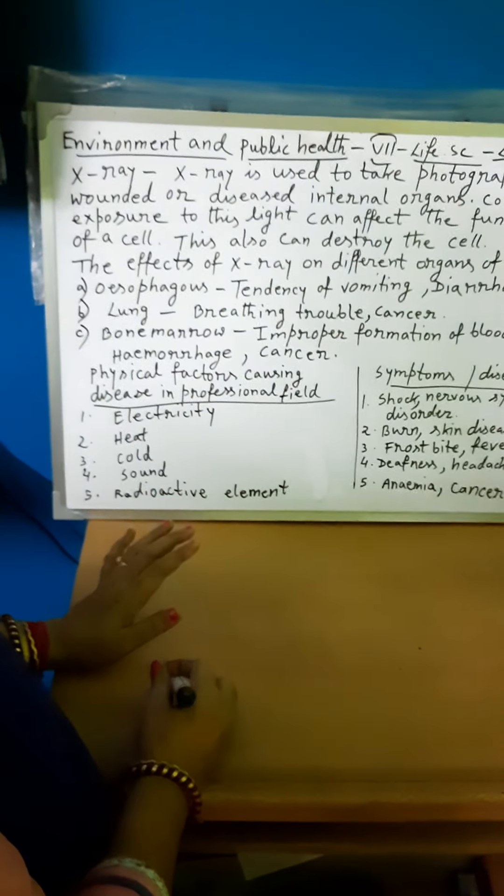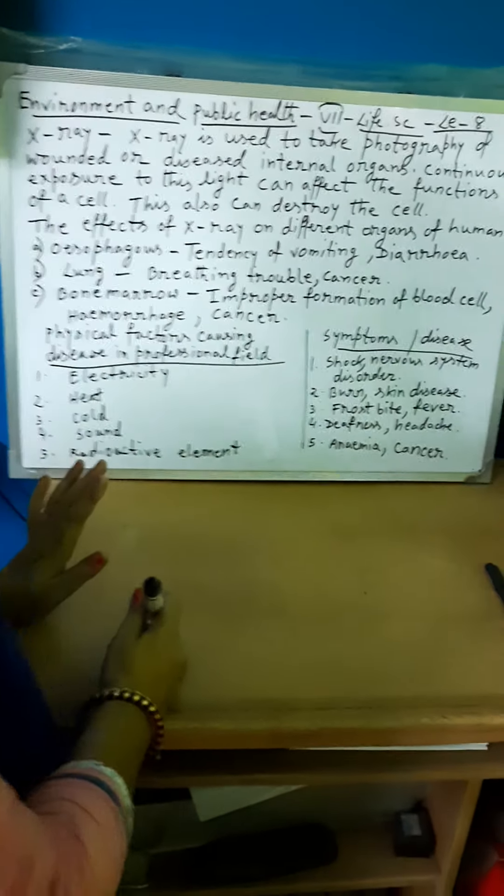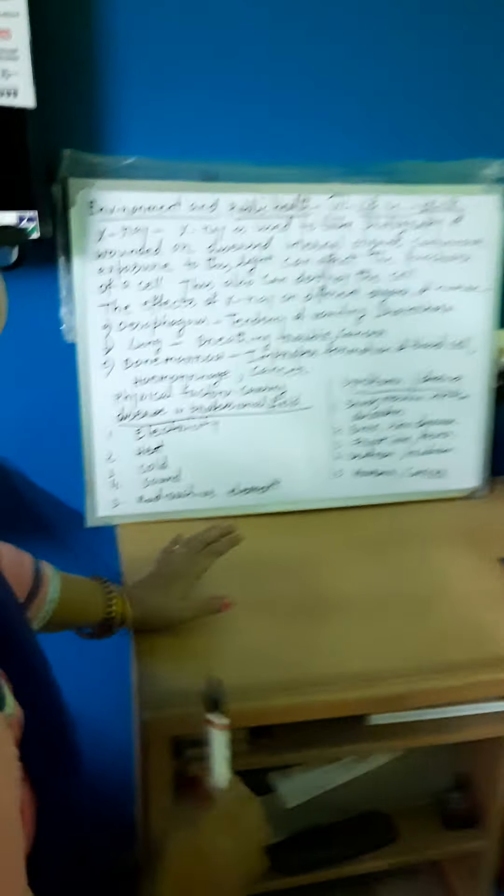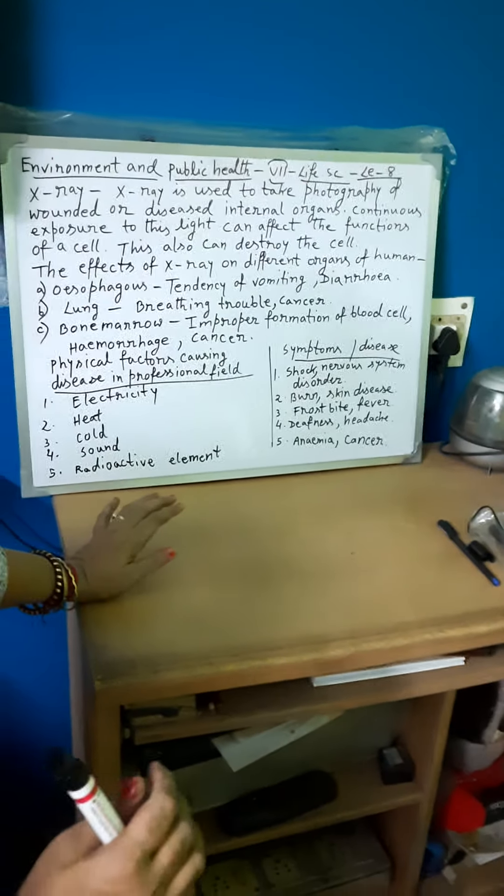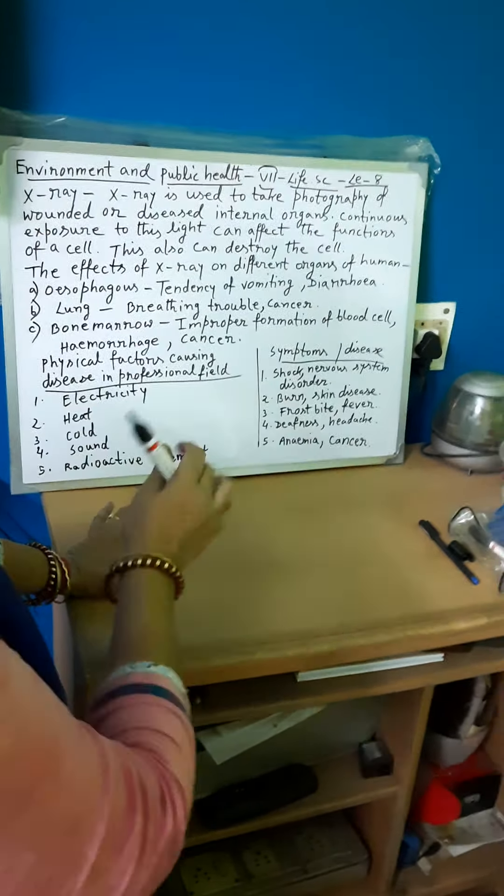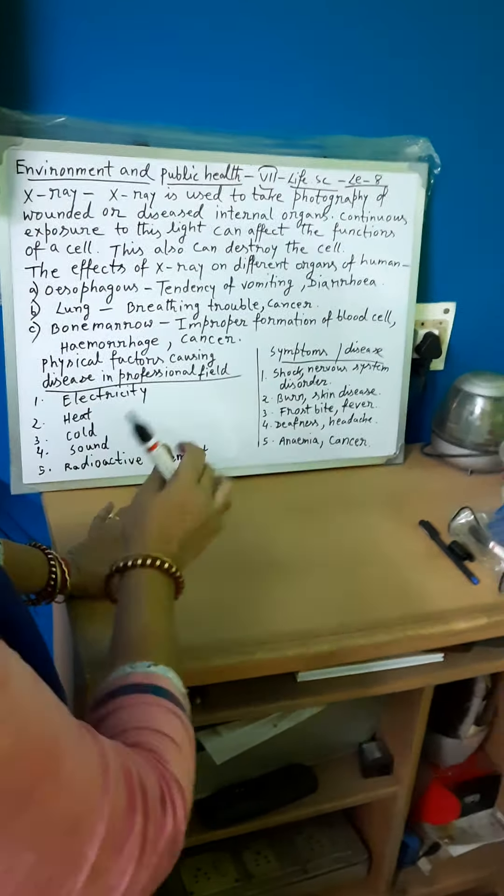Bone marrow - improper formation of blood cells. Bone marrow helps in blood cell formation. If bone marrow is affected, blood cell formation doesn't happen properly. Hemorrhage meaning internal bleeding occurs, and cancer can also happen.